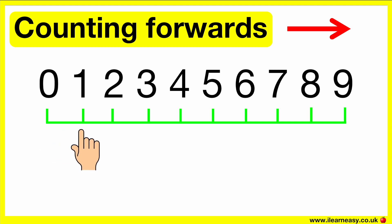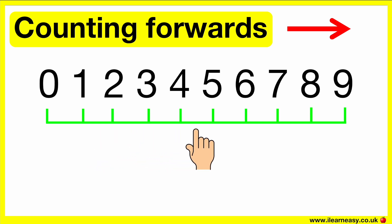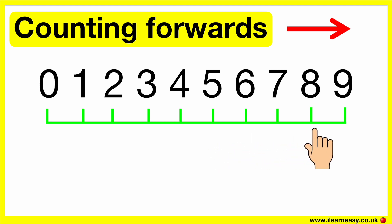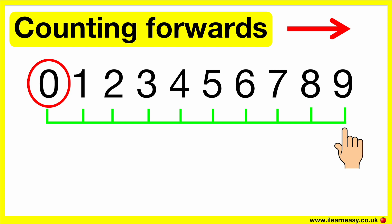Zero, one, two, three, four, five, six, seven, eight, nine. Here, we are counting forwards using single-digit numbers. Remember, a single-digit number is any number between zero to nine. The single-digit number zero has the lowest value and the single-digit number nine has the highest value.